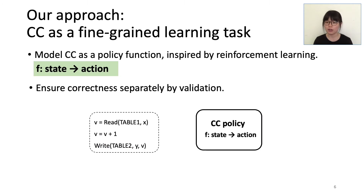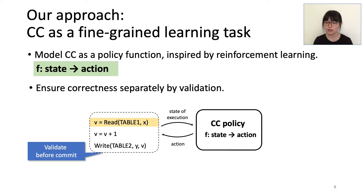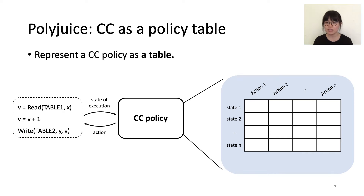Our goal is to model concurrency control as a learning task consisting of fine-grained actions. Inspired by reinforcement learning, we model a concurrency control algorithm as a policy function that maps each execution state to some action. For example, before reading X in a transaction, it will check the policy to figure out which actions to take according to the current state of execution. Since our goal is to optimize for performance, the learned actions don't ensure serializability during execution, so we always validate the transaction before actually committing it to the database.